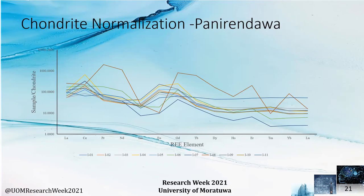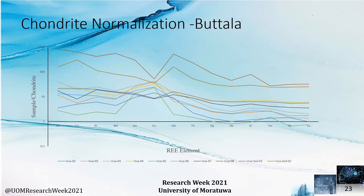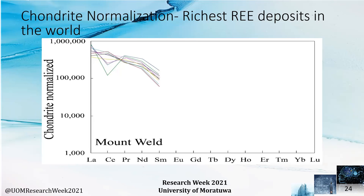This is the chondrite normalization carried out for the Paniranga samples. In the fresh iron ore itself, the variation is uniform, but there are some anomalous values for the highly weathered samples, and the highest average is shown in the IO8 sample. For the Dara deposit, the normalization shows that the variation is somewhat constant throughout the samples. For the Buttala deposit, the highest variation is shown because the degree of weathering varied across the samples. This normalization allows us to compare our results with global iron ore rare earth element deposits.